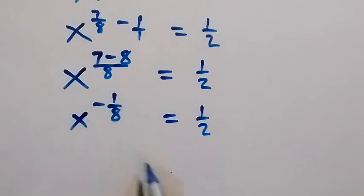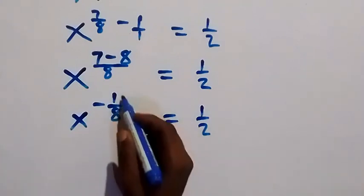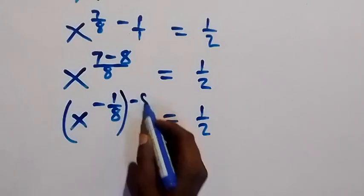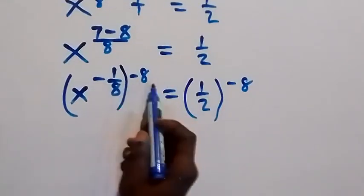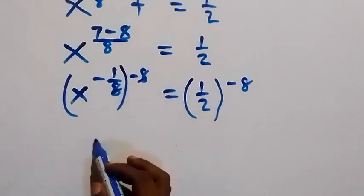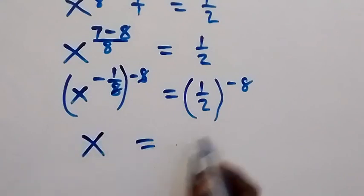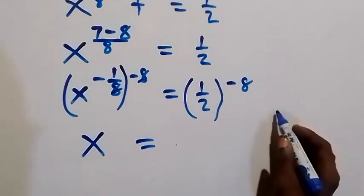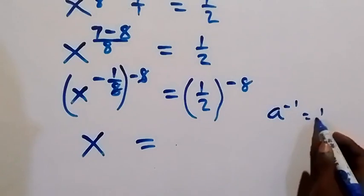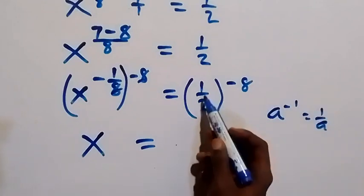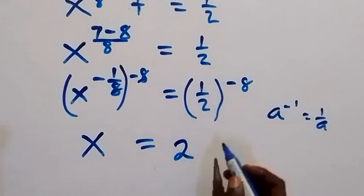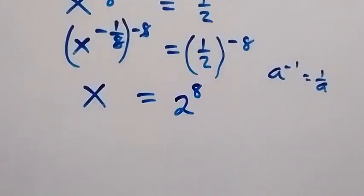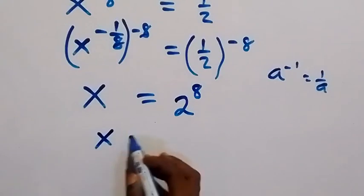To remove this negative one over eight, we multiply both sides' powers by negative eight. On the left side, negative times negative gives plus eight — the exponents cancel, leaving only x. On the right side, one over two raised to power negative eight: a negative exponent means we take the reciprocal, so one over two becomes two, and then two raised to power eight. Therefore x equals two raised to power eight, which we can also write as x equals 256.